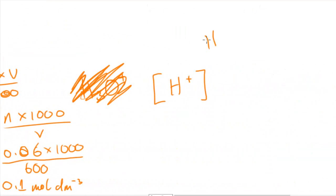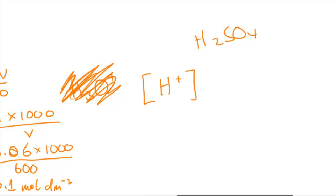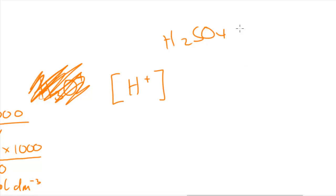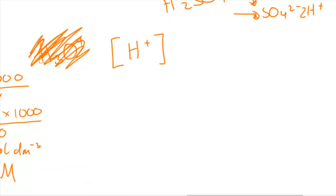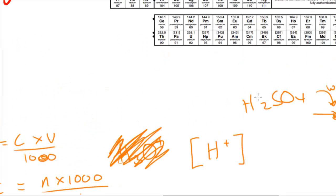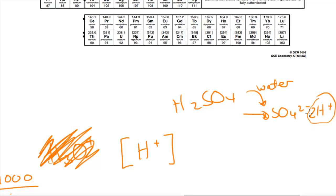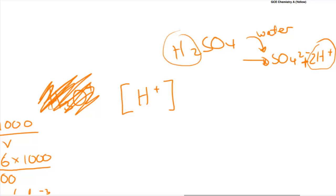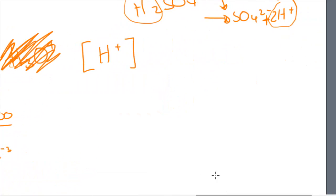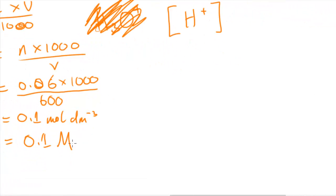The formula of the acid is H2SO4, which is a strong acid. This means it dissociates completely in solution into SO4²⁻ and two H⁺ ions. So for every mole of H2SO4 we get two moles of H⁺ ions. Since we have H2 rather than just H, we multiply 0.1 M by 2 to get a concentration of H⁺ ions of 0.2 M.